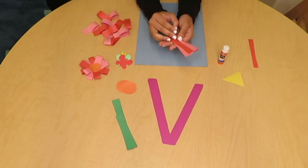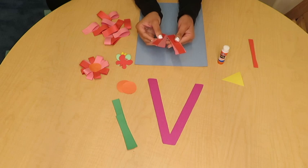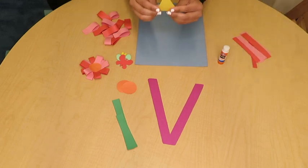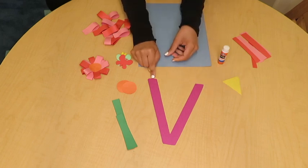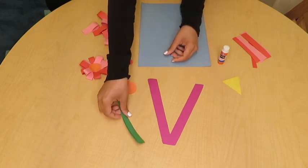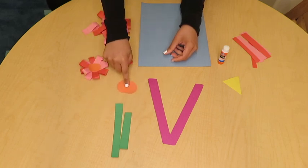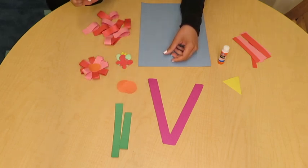And this is a great time for you guys to use your scissors as a fine motor skill. We're going to need a little triangle, and this is going to be our vase, the letter V. Two green strips, and these are going to be our flower stems.